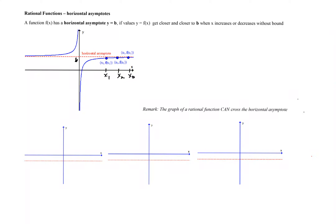A rational function might have a horizontal asymptote. A horizontal asymptote for a function f of x is a horizontal line with the equation y equals b such that the values of f of x get closer and closer to b when x increases without bound or decreases without bound.